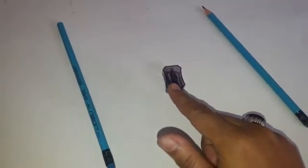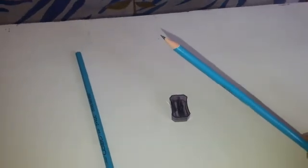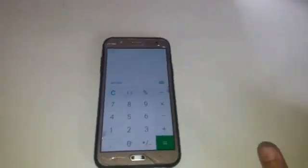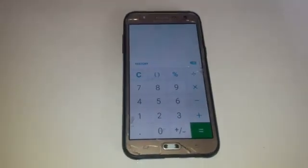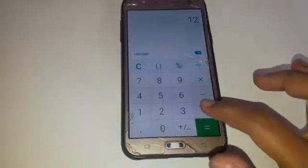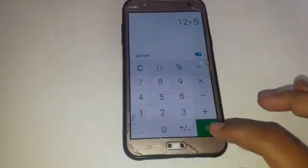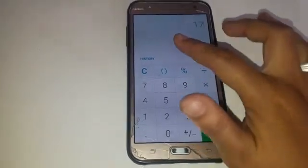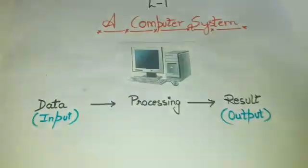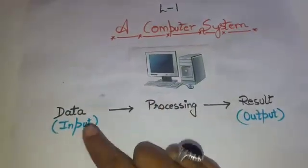Now one more and last example I want to show you. See calculator, you can see the calculator. If we enter the numbers and we add, what we get? Result 17. I hope my points are clear. Same way computer also takes the data, does the processing and gives the result.